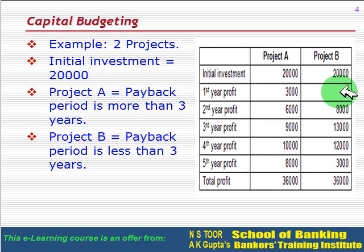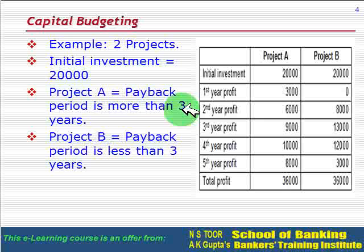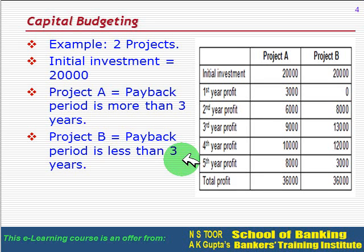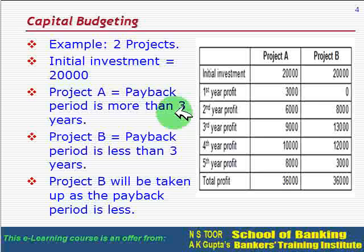In case of Project B, although in the first year the profit is zero, in the second and third year the inflows are higher, totaling 21,000. So the payback period of Project B is less than three years. Comparing the two, Project A has a payback period of more than three years while Project B has a payback period of less than three years. Therefore, Project B will be taken up as it has the shorter payback period.